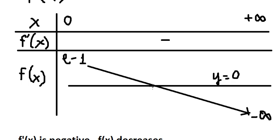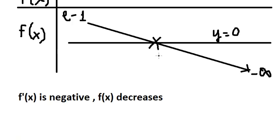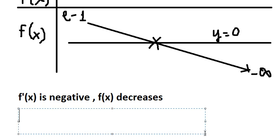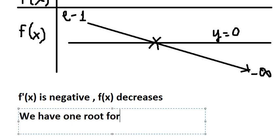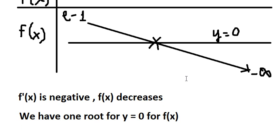We can see that this curve will cross y equals zero somewhere in here. Because there is one intersection, that means we have exactly one root for y equals zero for the function f of s. And this is the final answer.